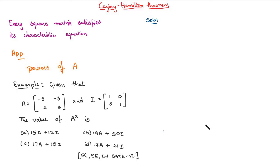The characteristic equation of A is minus 5 minus lambda minus 3, 2, 0 minus lambda is equal to 0. Solving this, we get lambda square plus 5 lambda plus 6 is equal to 0.